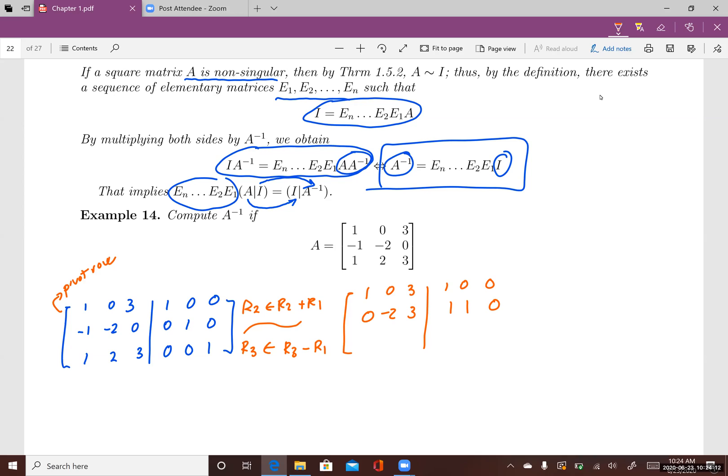And row 3 minus row 1, I will have 1 minus 1 is 0, 2 minus 0 is 2, 3 minus 3 is 0, 0 minus 1 is negative 1, 0 minus 0 is 0, 1 minus 0 is 1.